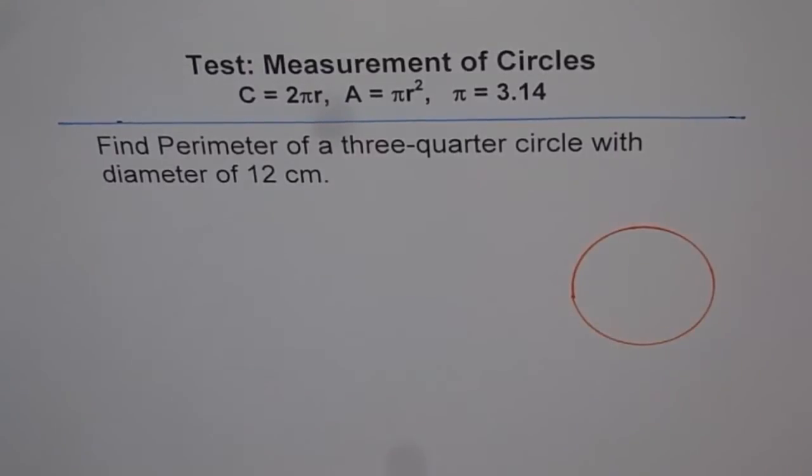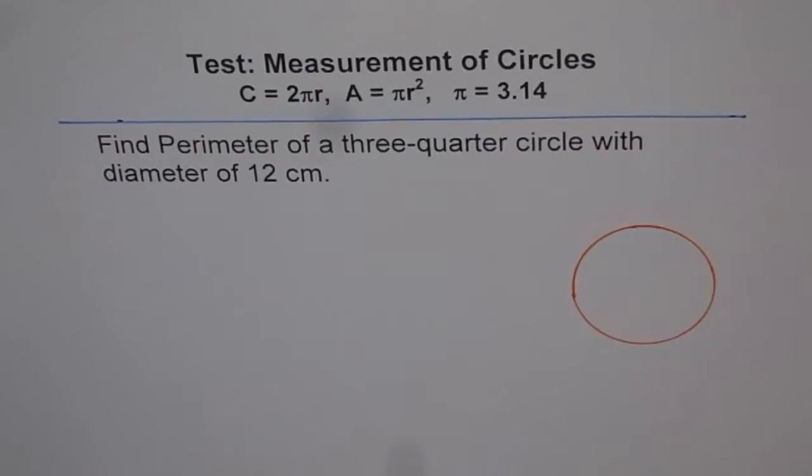Here is another question very similar to the previous one. Find perimeter of a three-quarter circle with diameter of 12 cm. So I would like you to answer the question and then look into my suggestion.